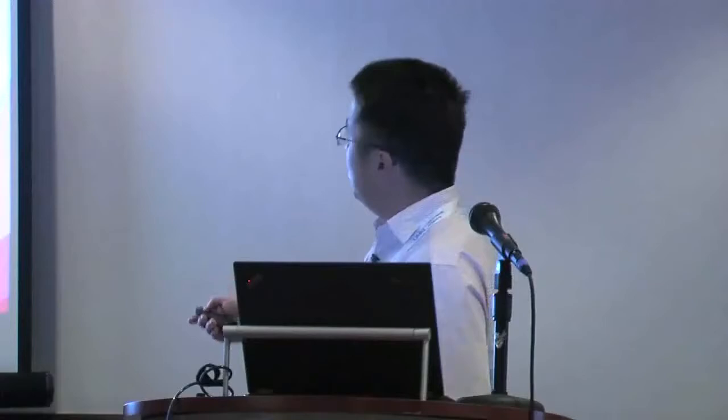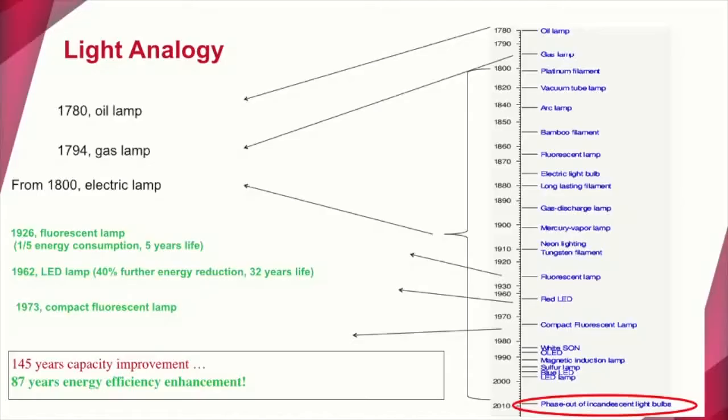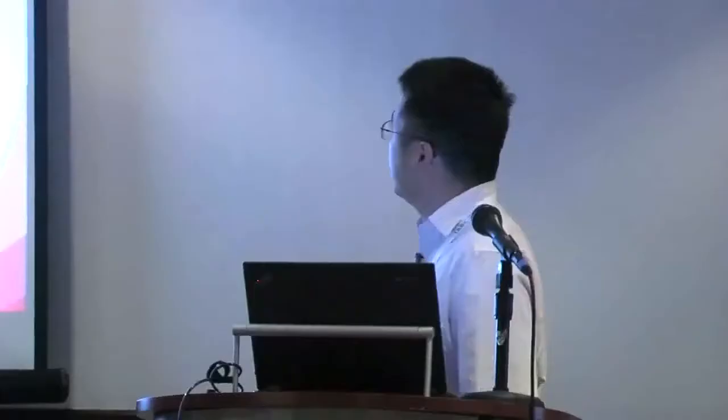We can see a lot of similarities. If we compare the development history of lighting technologies with that of wireless technologies, it may inspire us about what we may do in the future. This shows a timeline of lighting technology. The oil lamp was invented in 1780, then we have the gas lamp, and starting in the 1800s the electric lamp. Then we have all different kinds of electric lamps — the arc lamp, bamboo filament, electric light lamp, gas-charged lamp, mercury lamp, and neon lighting. As we develop over almost 100 years, people are developing different technologies trying to make lights brighter and brighter.